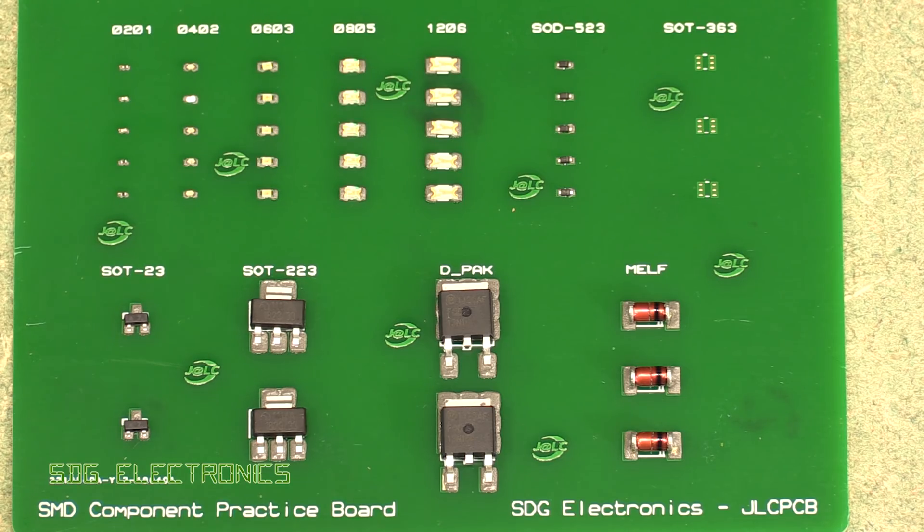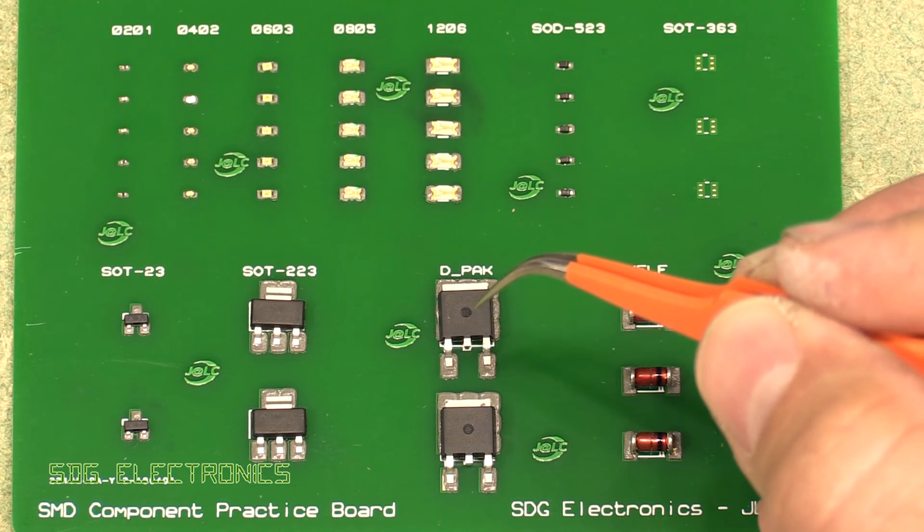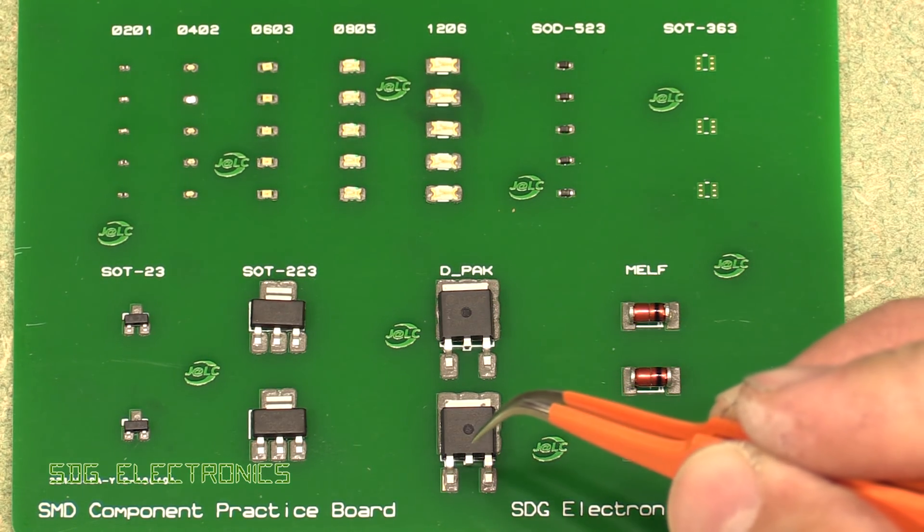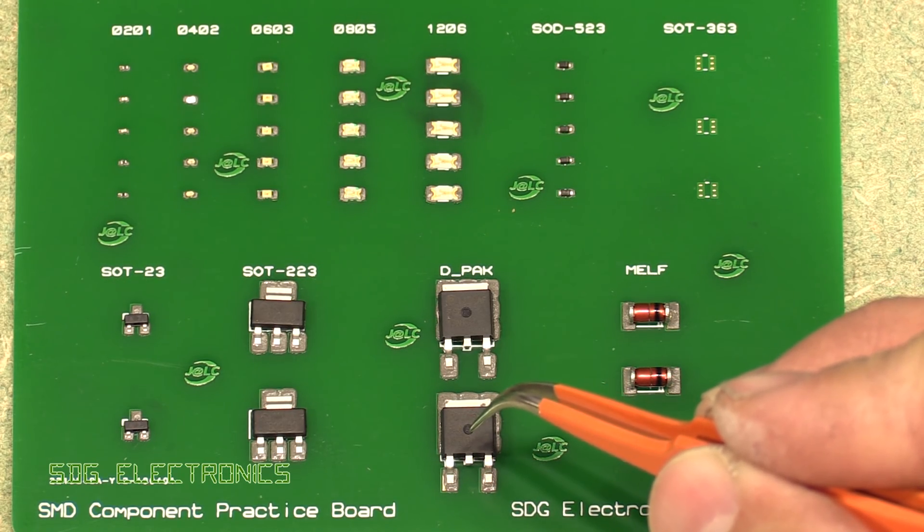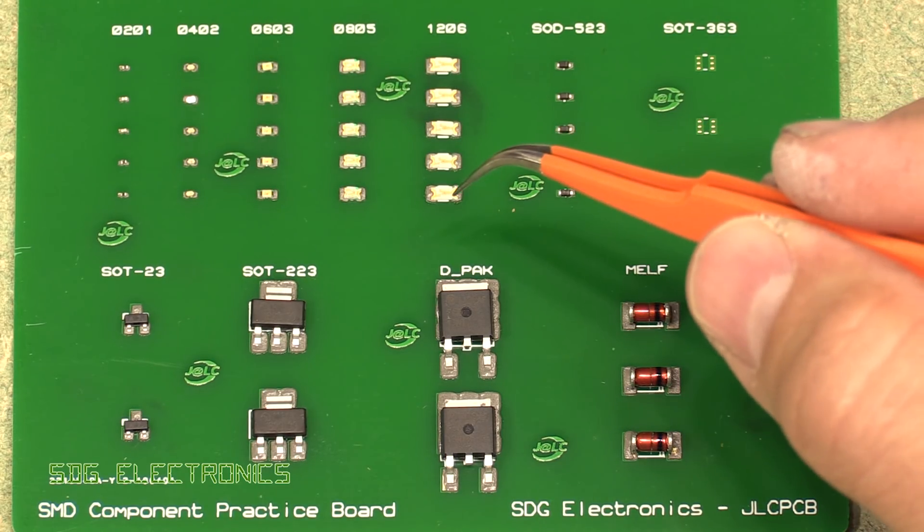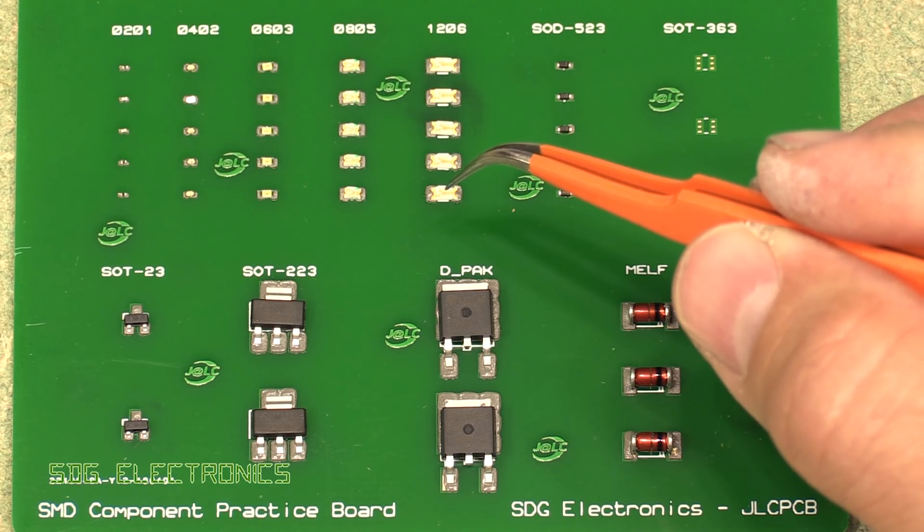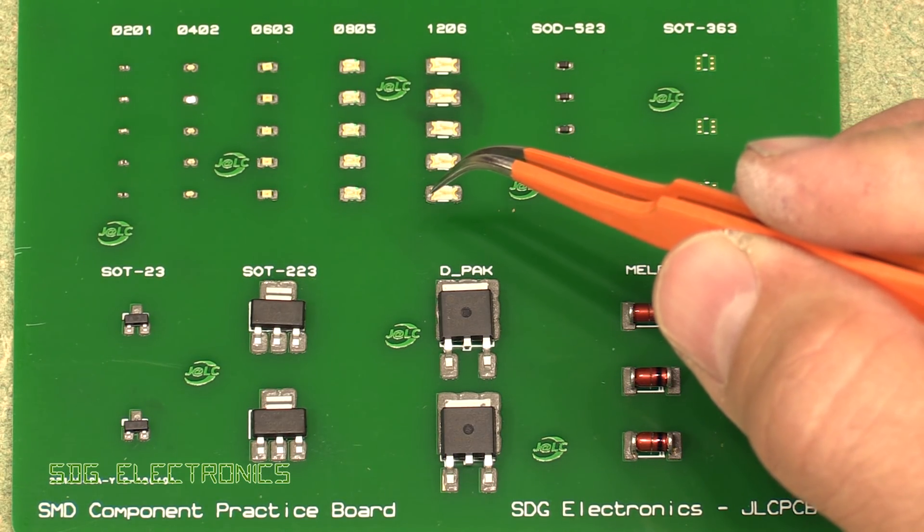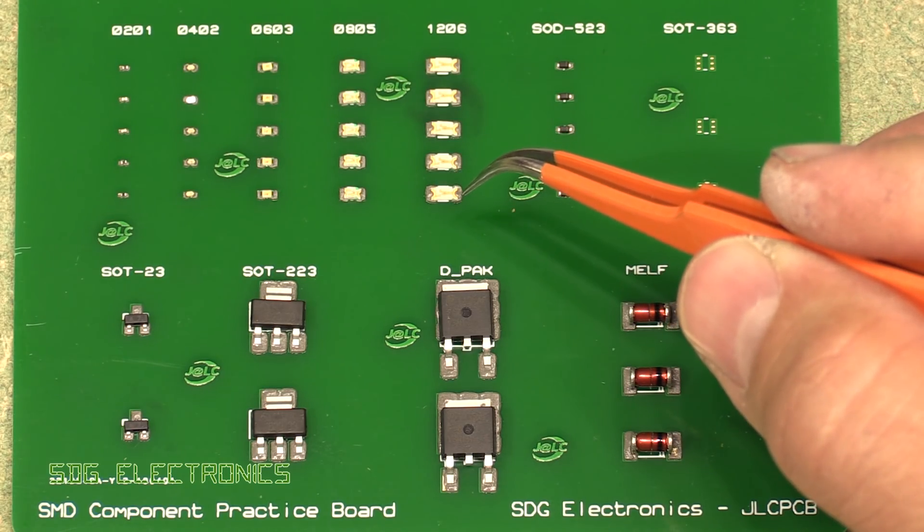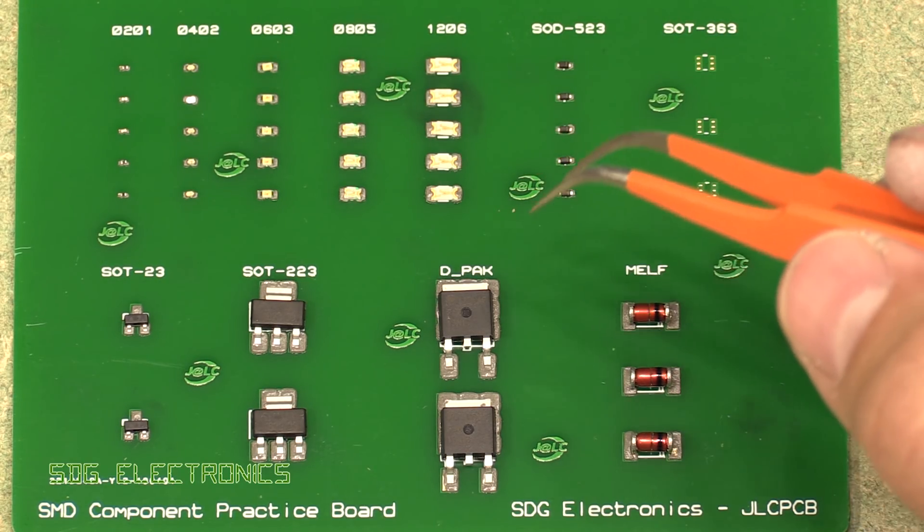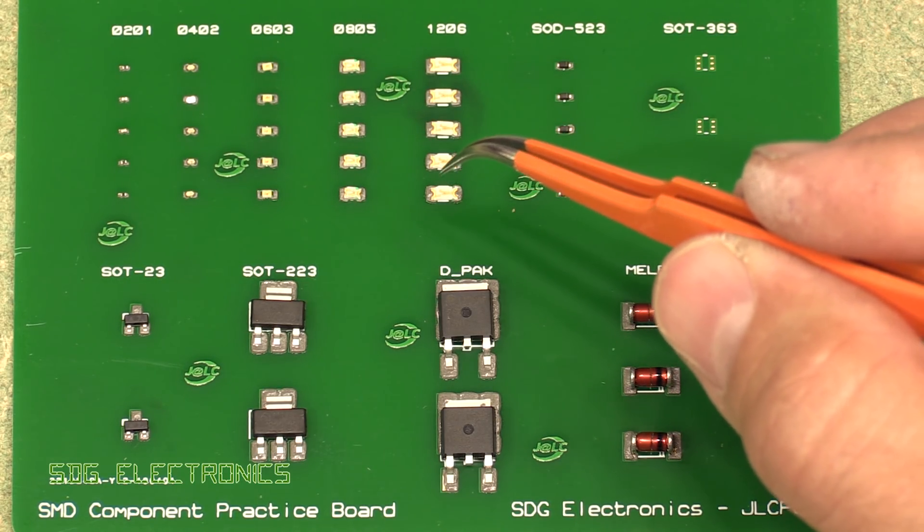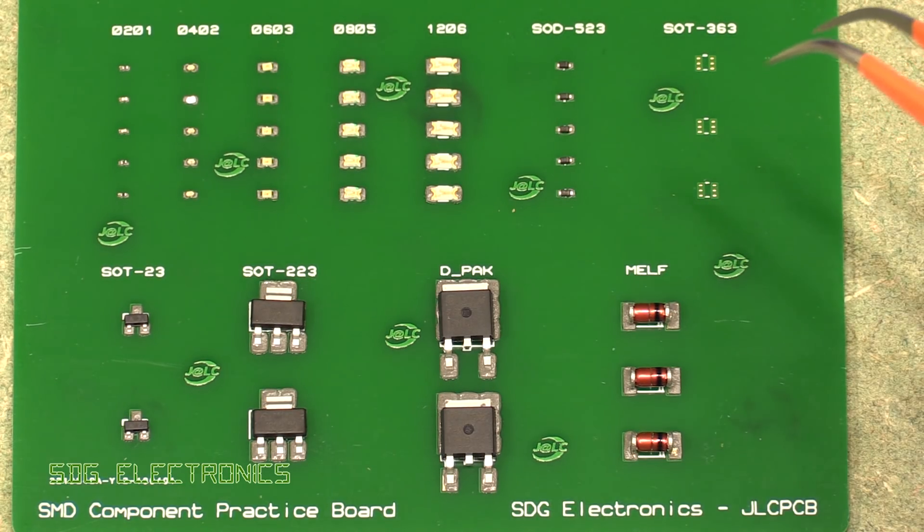When you are putting the components on the board, you do want to make sure you apply a little bit of pressure just so that all of the metallic contacts contact the solder paste properly. On two-pin devices especially, if only one has made contact with the solder paste, when it reflows the surface tension will pull the component off the pad that hasn't made contact properly, and you'll end up either with a tombstoned component or just one that isn't in the right place.